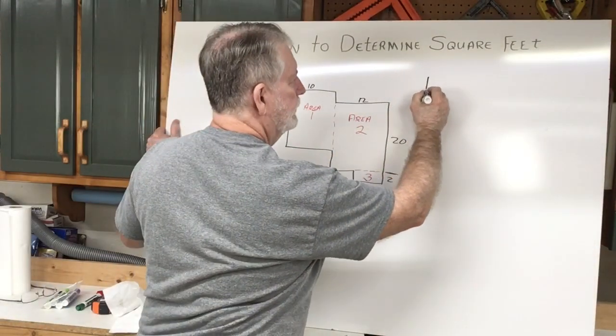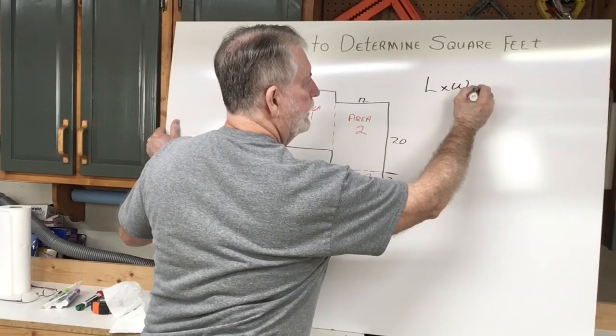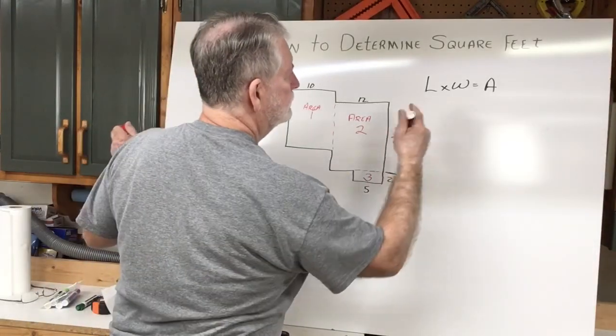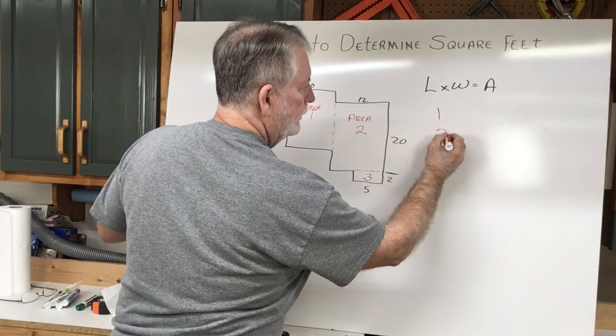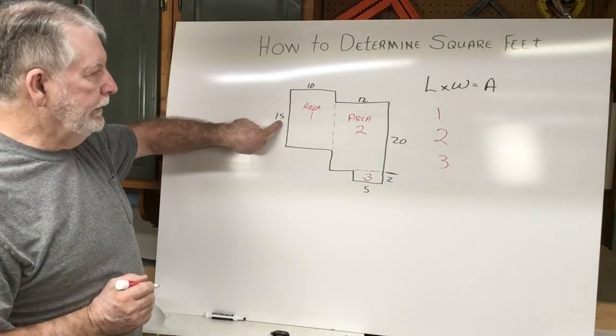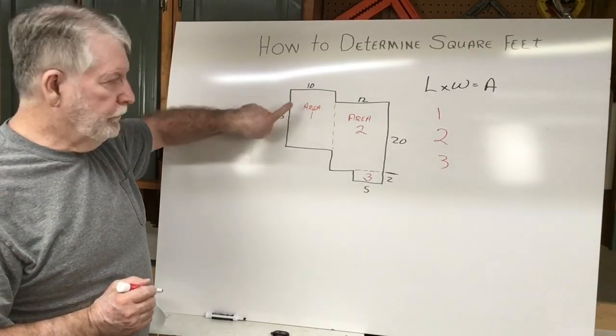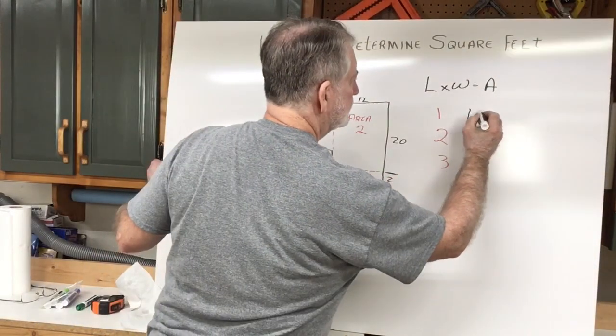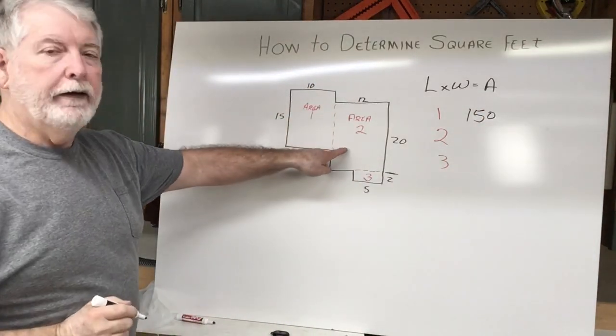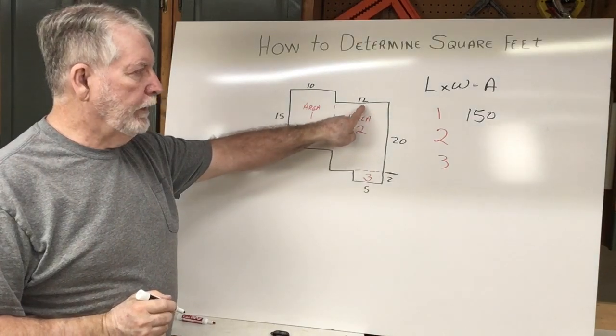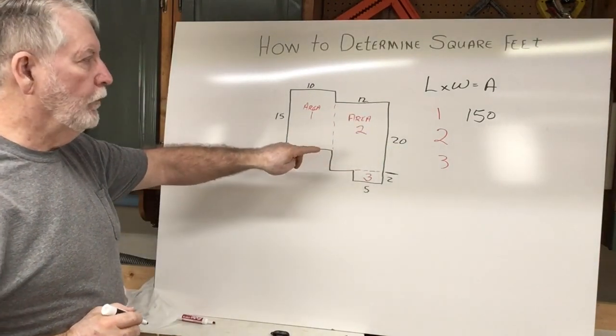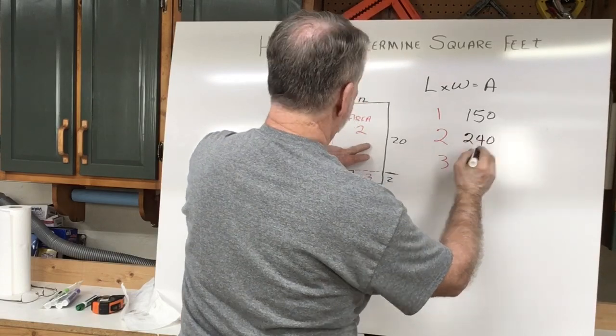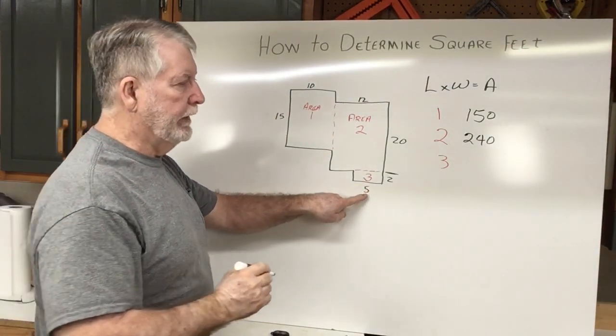So if we write out our formula again. Length times the width equals the area. We're going to have 1, 2, and 3. So we take the length times the width, just as we did before. So that's going to be 15 times 10. That's going to be 150. If we take our next area, that is 12 by 20. What is that going to be? And then the last one, 2 times 5 is 10.